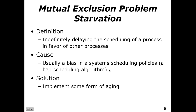Starvation is caused by biases in the scheduling system. A solution might be to implement aging — if a process has been waiting indefinitely while others are running, stop all the other processes and let the aging process run instead. That's the classic solution to the problem.